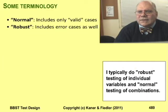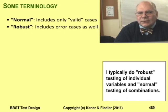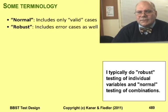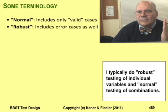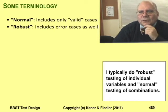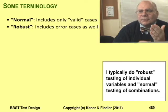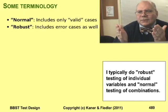Jorgensen's next distinction is between normal and robust testing. In Jorgensen's terminology, normal testing means testing only the valid values. Robust testing means testing valid and invalid values. Normally, I do robust testing of individual variables, but normal testing when I test variables in combination.